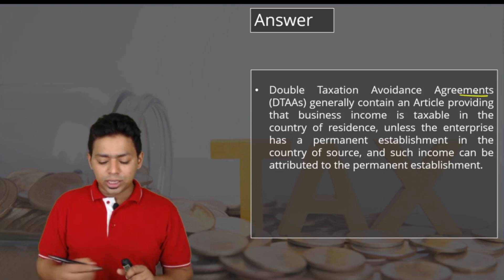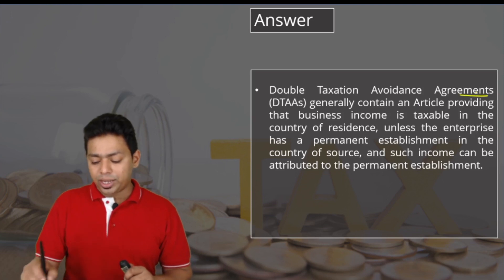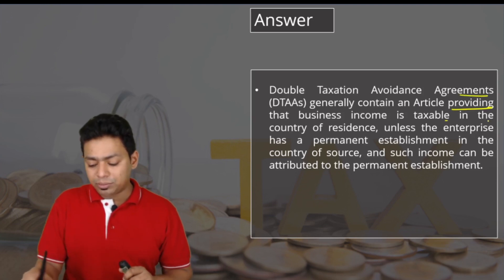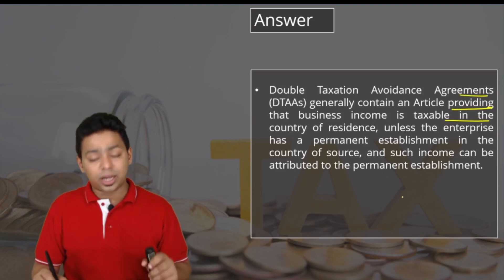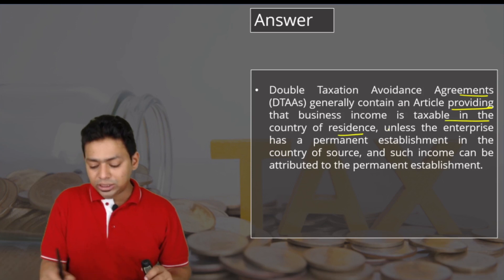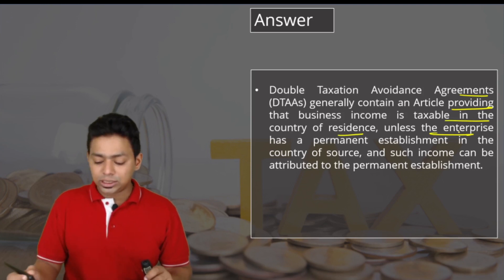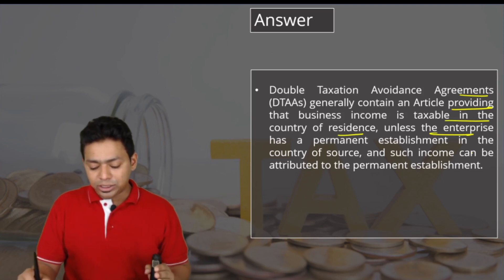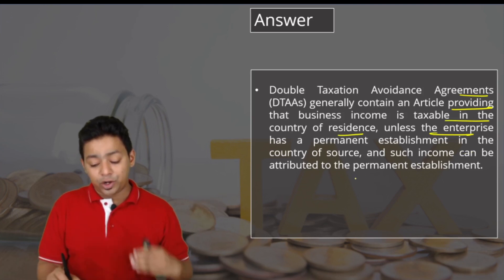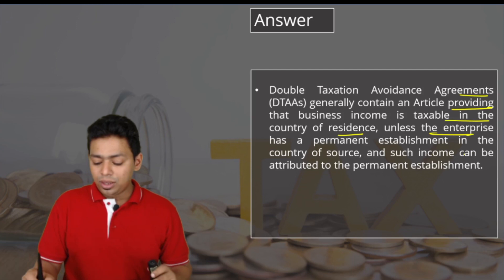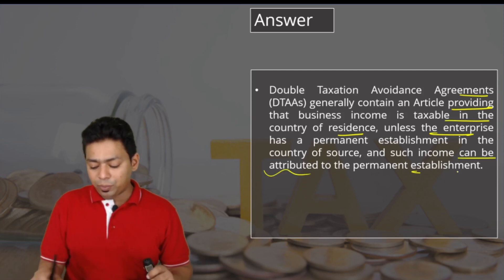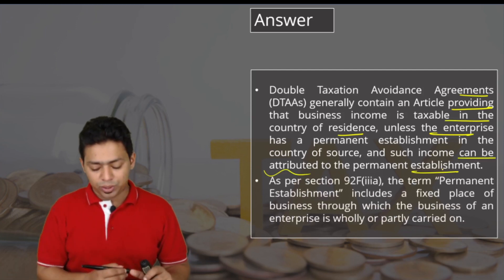Double taxation avoidance agreements generally contain an article providing that business income is taxable in the country of residence, unless the enterprise has a permanent establishment in the country of source and such income is attributable to that permanent establishment.